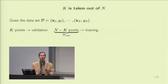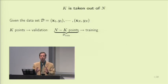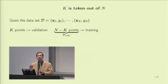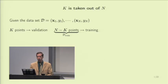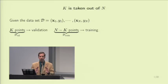We are given dataset D with capital N points. We take K points for validation — any K points, as long as you don't look at their input-output to guide the selection — and the remaining N minus K go for training. The K validation points form D-val, the training points form D-train, and their union is D.